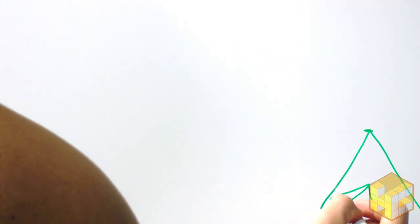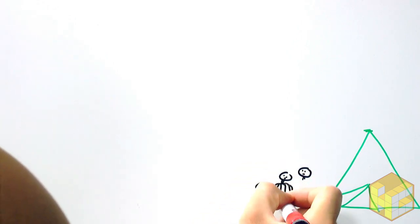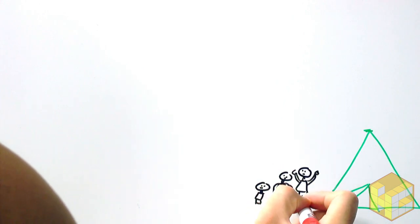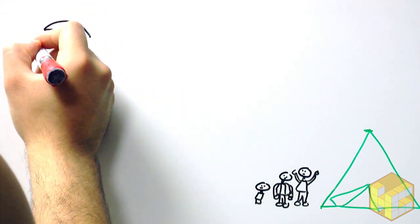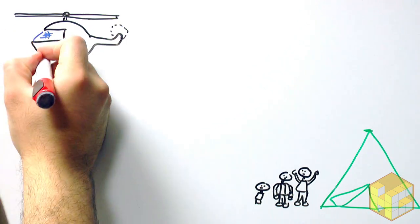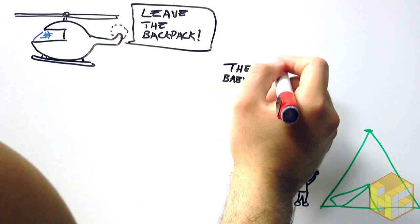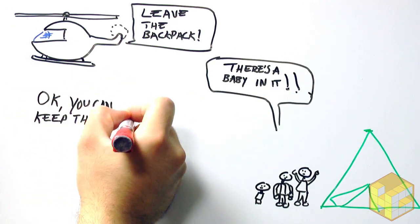A family of four was camping not far away, and when St. Helens exploded, they were trapped because fallen trees from the blast had blocked out the road. A passing helicopter picked them out. Worried about the weight of the copter, the rescue team yelled down, 'Leave the backpack!' 'There's a baby in it!' 'Okay, you can keep the baby.'